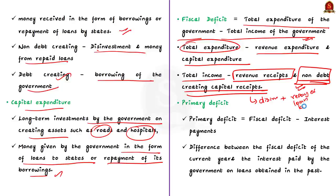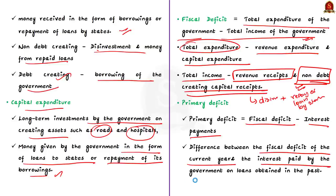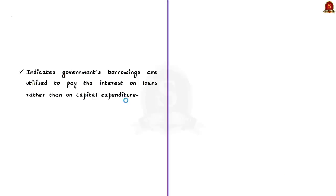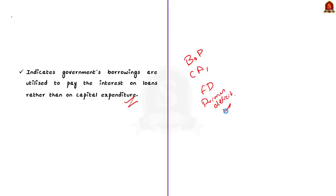Coming back to fiscal deficit: the formula for fiscal deficit is total expenditure of the government minus total income of the government. The total expenditure includes revenue expenditure and capital expenditure, and the total income includes revenue receipts and the non-debt creating capital receipts. Non-debt creating capital receipts include earnings from disinvestment and money earned from repayment of loans by state governments. Finally, primary deficit is the difference between fiscal deficit and interest payment — it is the difference between the fiscal deficit of the current year and the interest paid by the government on loans obtained in the past. Thus, it indicates the government's borrowings are utilized to pay interest on loans rather than on capital expenditure. In this segment, we saw about balance of payment, current account, capital account, revenue deficit, capital deficit, fiscal deficit and primary deficit.